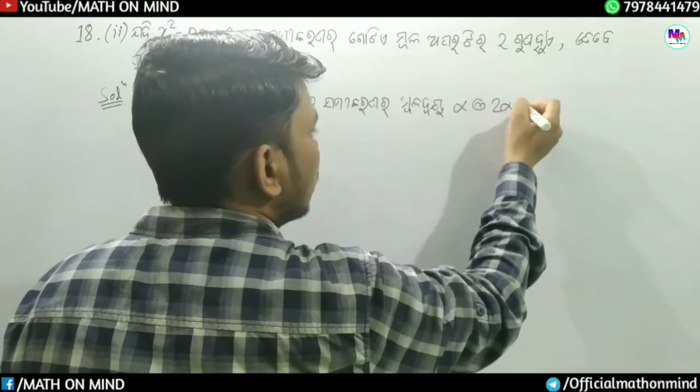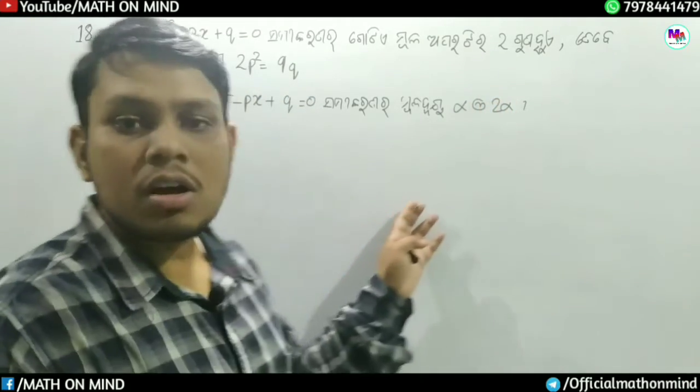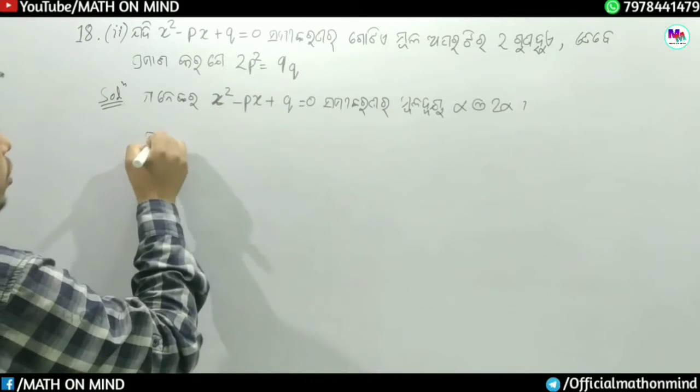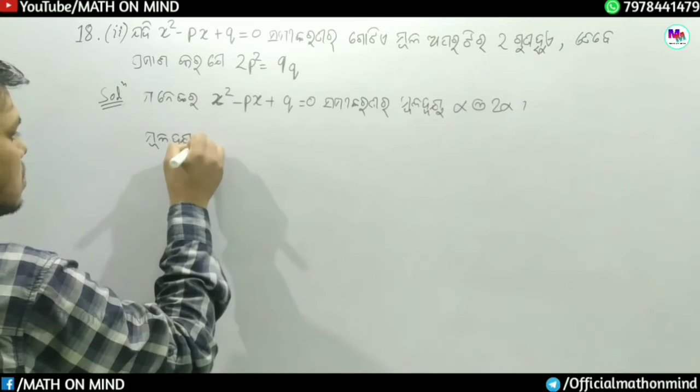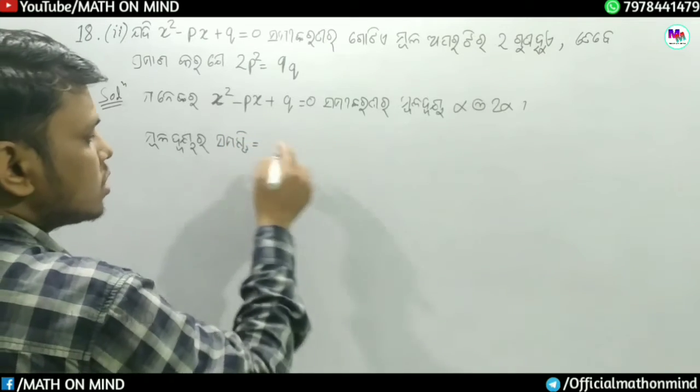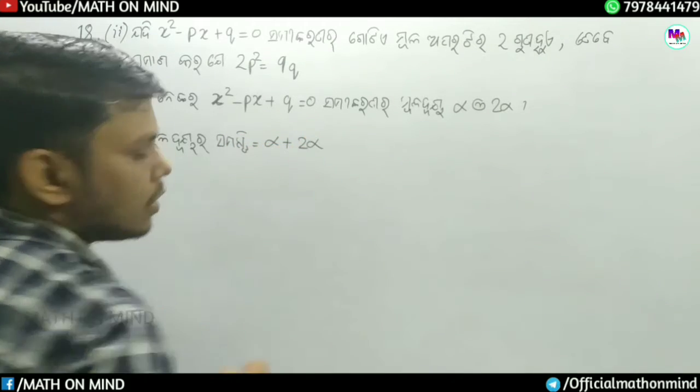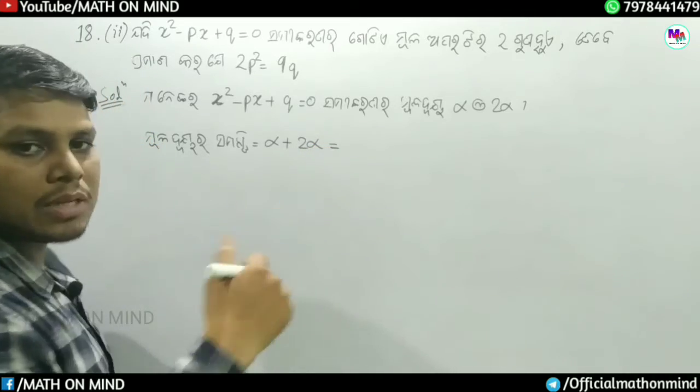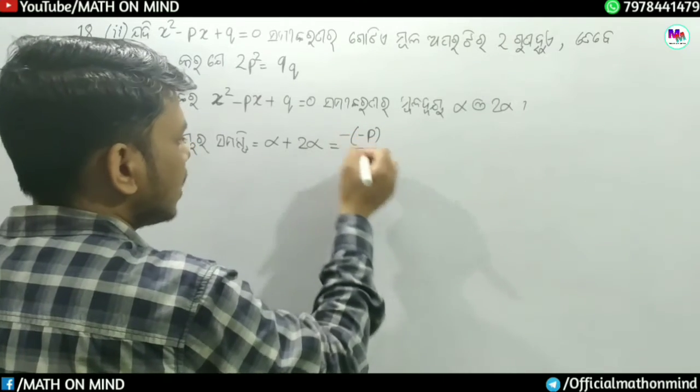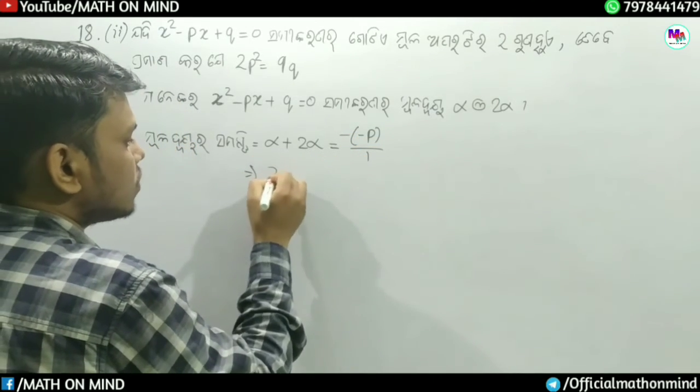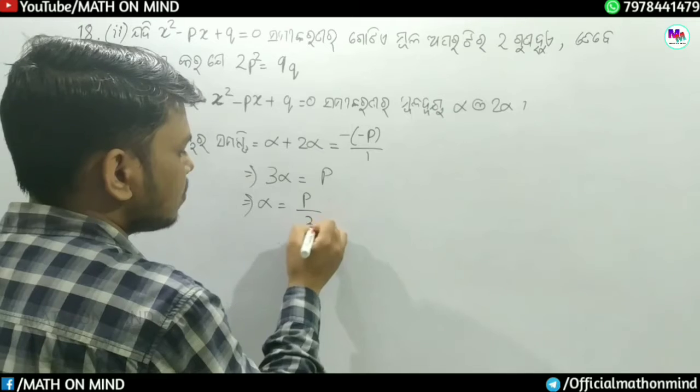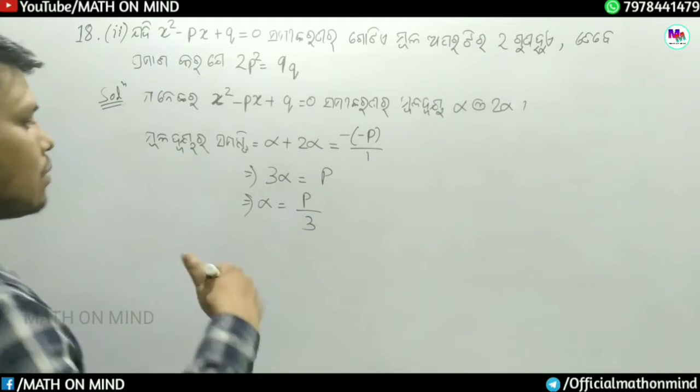For the equation x square minus px plus q is equal to 0, if the roots are alpha and 2 alpha, then alpha plus 2 alpha, which is 3 alpha, equals minus b by a.